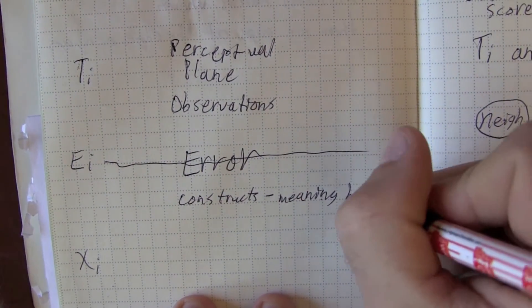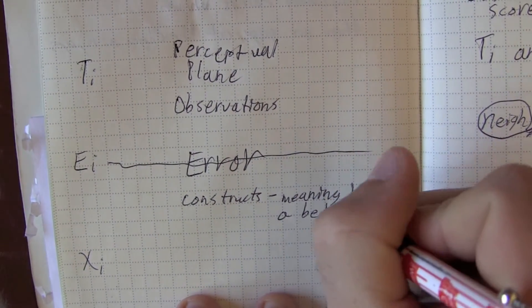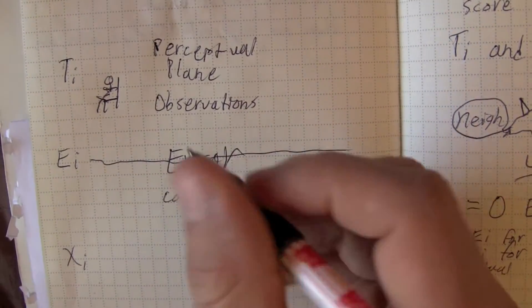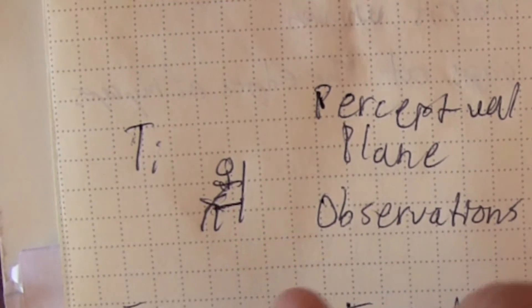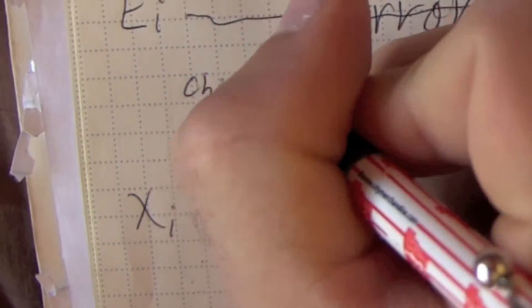Then in the observed score, there are constructs, which are the meaning behind the behavior. So in the perceptual plane, we have a chair, and the person is resting on the chair, and so our observation is that chairs are for sitting.